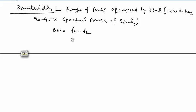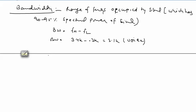For bandwidth calculation, a rectangular pulse is very useful. From a rectangular pulse we can calculate bandwidth for digital communication. A rectangular pulse has a Fourier transform in the form of a sinc function. The sinc spectrum has a main lobe and side lobes at positions 1/T, 2/T, minus 1/T, minus 2/T, and so on.